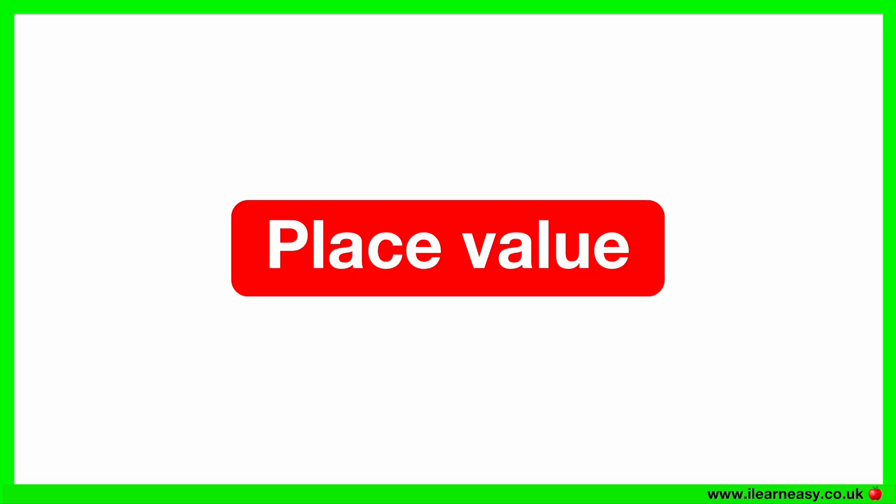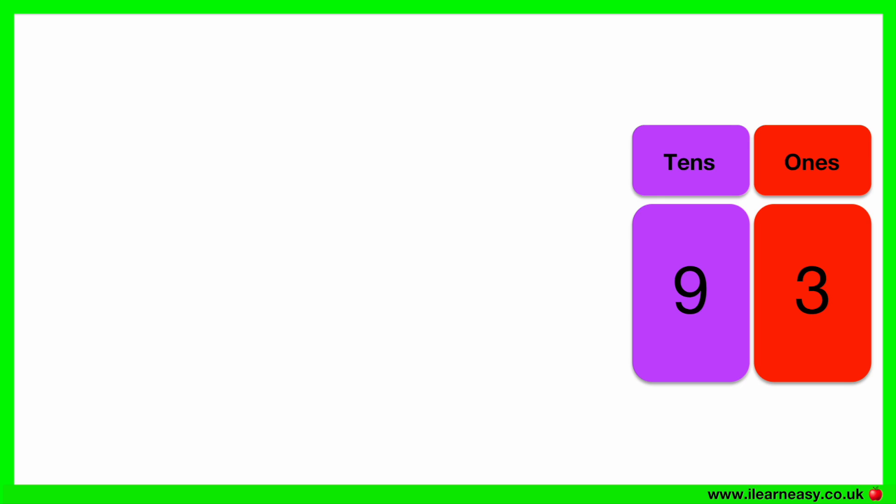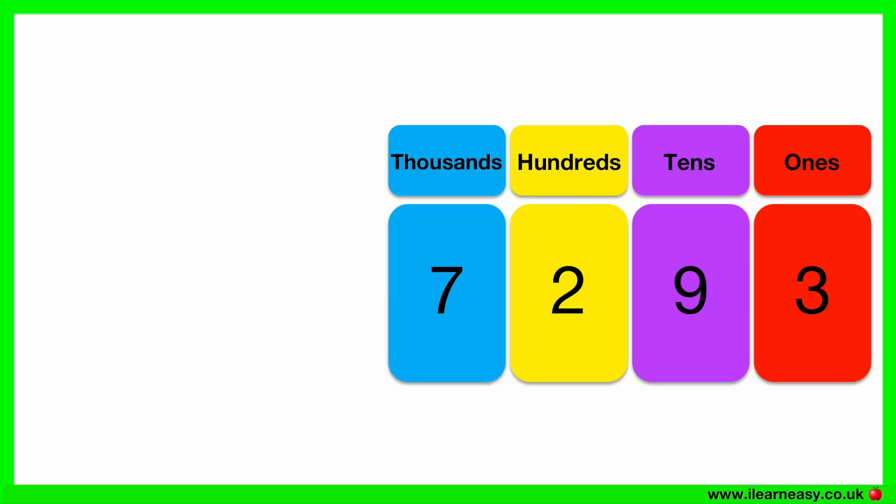Place value refers to the value of a digit according to its position in a number. This includes ones, tens, hundreds, and thousands.